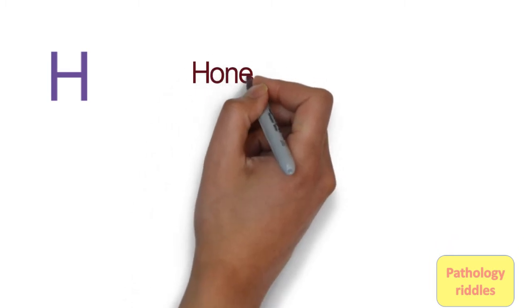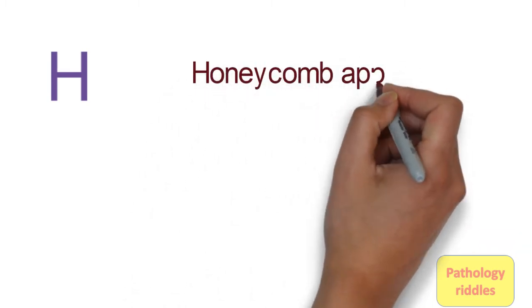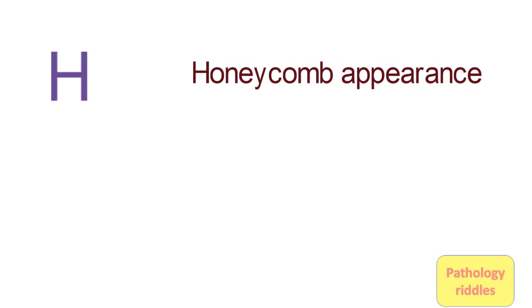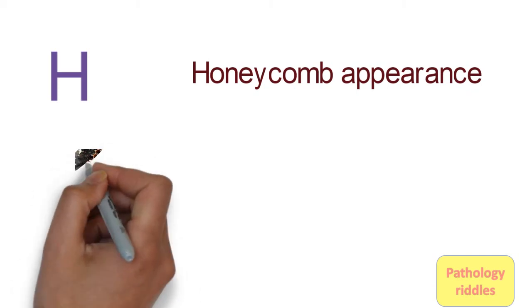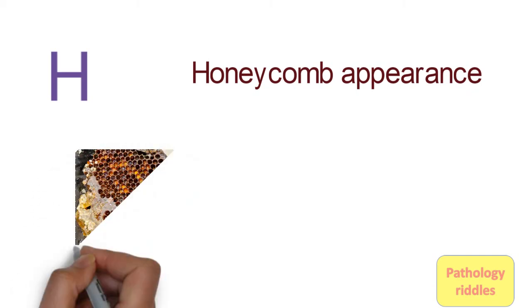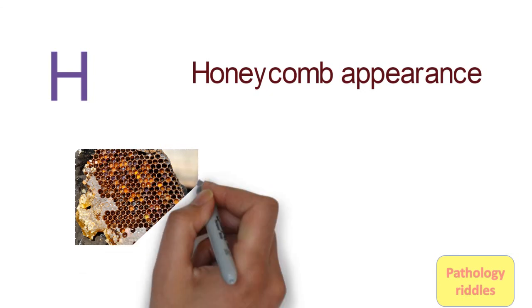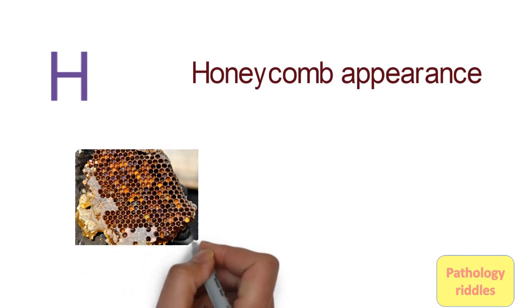And H. H stands for honeycomb appearance. This is most commonly seen in bronchiectasis, due to destruction of the bronchial walls. They become dilated and give the appearance of honeycomb.